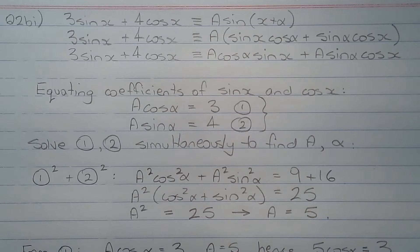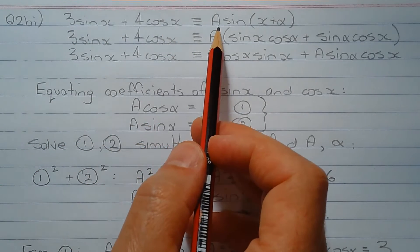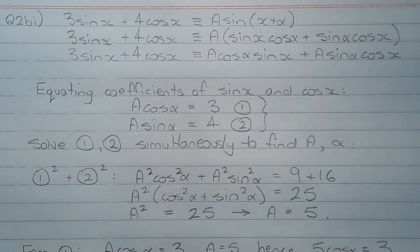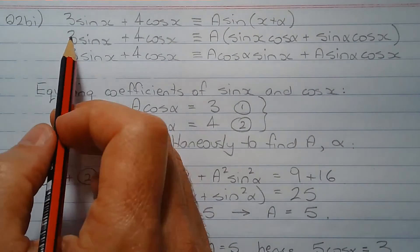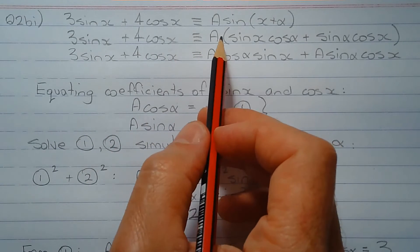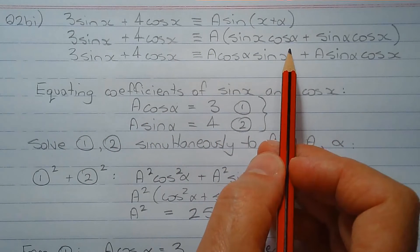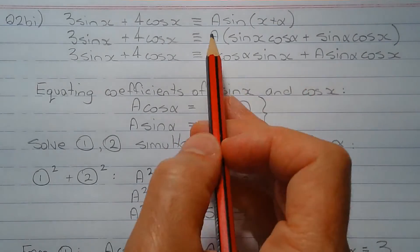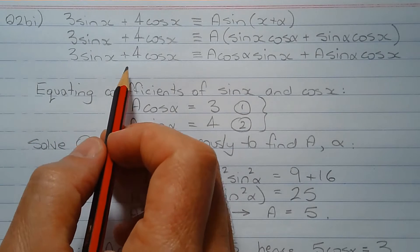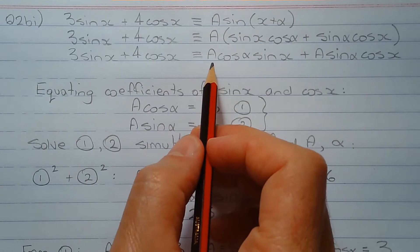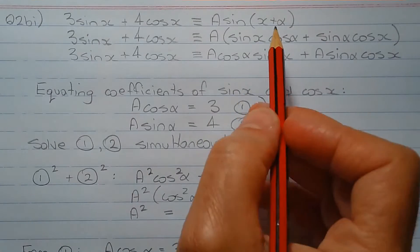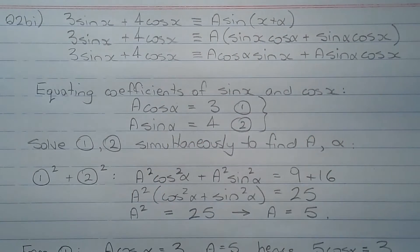Starting off with the identity, 3 sin x + 4 cos x ≡ A sin(x + α). Applying a compound angle expansion to the right hand side gives 3 sin x + 4 cos x ≡ A multiplied by (sin x cos α + sin α cos x). Expanding the brackets on the right hand side gives 3 sin x + 4 cos x ≡ A cos α sin x + A sin α cos x. Note that sin x and cos α have been switched to make equating coefficients of sin x and cos x a little bit easier.